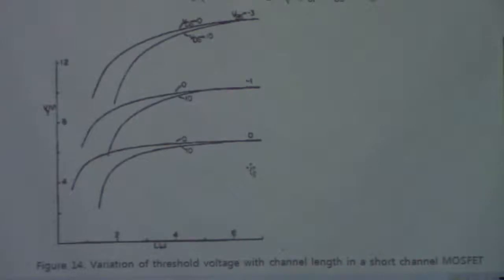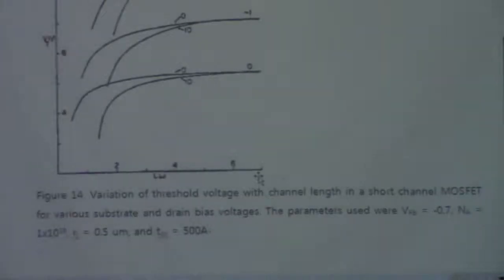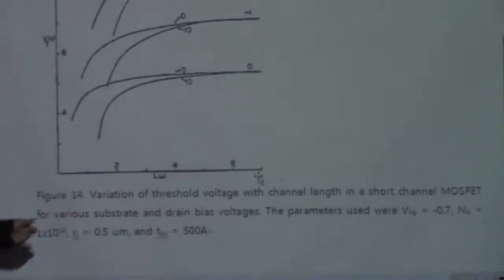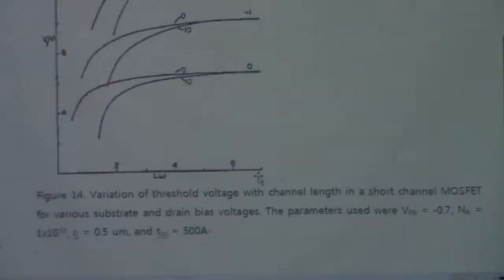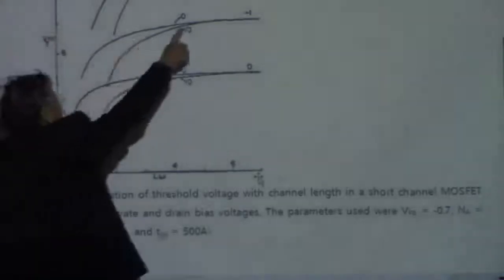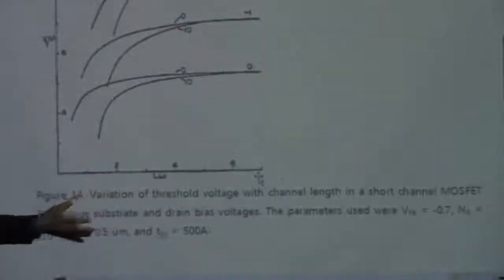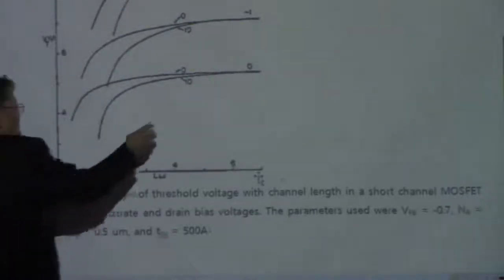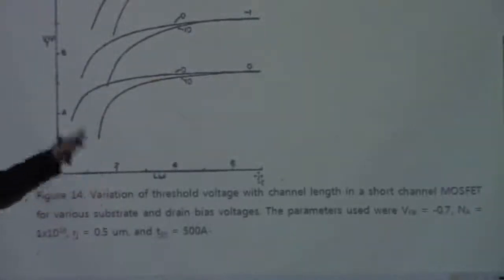This plot shows the variation of threshold voltage with channel length for a short-channel MOSFET for various substrate and drain bias voltages. You can see that with zero drain voltage and with drain voltage equal to 10, the threshold voltage decreases more sharply with channel length when drain voltage is applied.